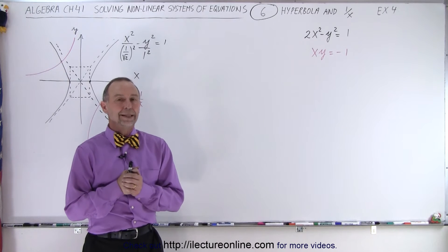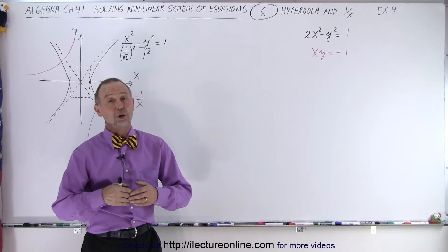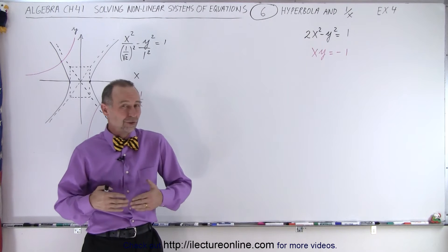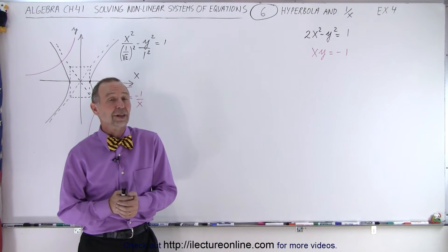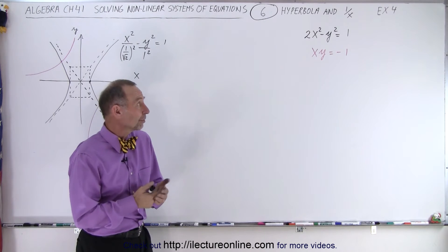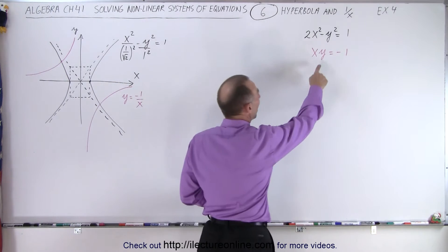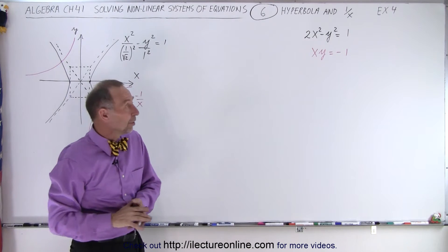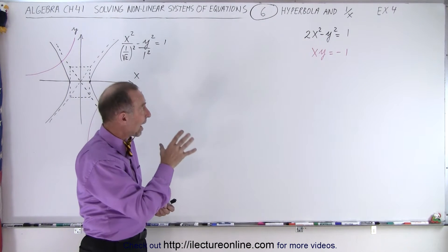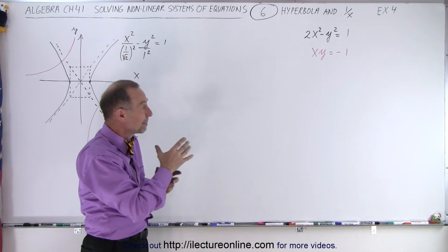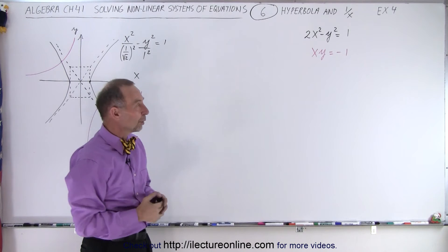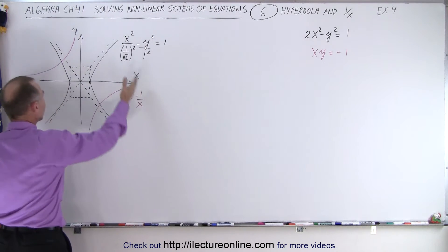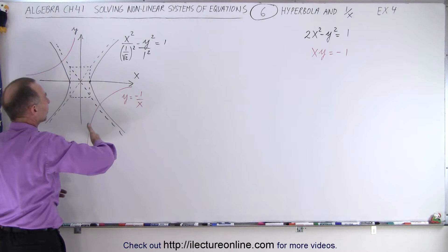Welcome to our lecture online. Not all nonlinear equations are circles, ellipses, or hyperbolas — they can be something else. For example, they can be of the y equals 1 over x type variety. So here we have a hyperbola mixed in with a y equals 1 over x type of equation, and if we were to graph it, it looks like this.